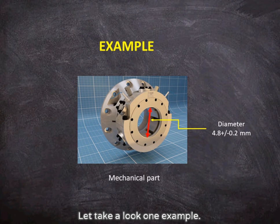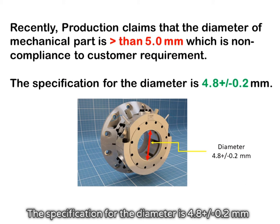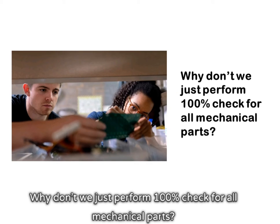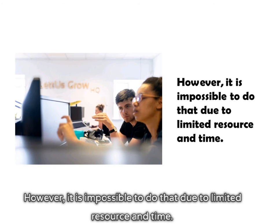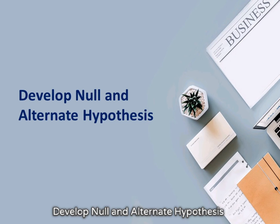Let's take a look at one example. Recently, production claims that the diameter of a mechanical part is greater than 5 millimeters, which is non-compliance to customer requirement. The specification for the diameter is 4.8 plus or minus 0.2 millimeters. How to verify that the mechanical part is greater than 5 millimeters? It is impossible to perform 100% check for all mechanical parts due to limited resource and time. QA engineers decided to use a statistical test. Develop null and alternate hypothesis.